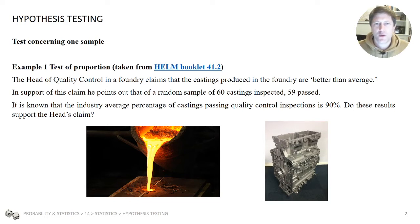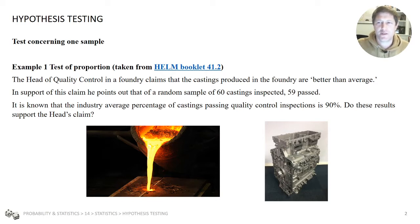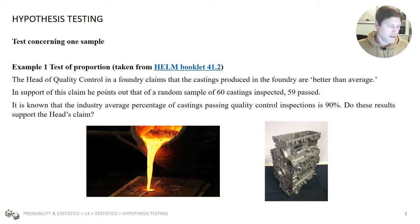The head of quality control in a foundry claims that the castings produced are better than average. He says this because out of a random sample of 60 castings inspected, 59 passed, whereas the industry standard is that 90% of castings would pass. Do these results support the head of quality control's claim? 59 out of 60 is more than 90%, but is it enough to claim with confidence that the foundry is doing better than average?